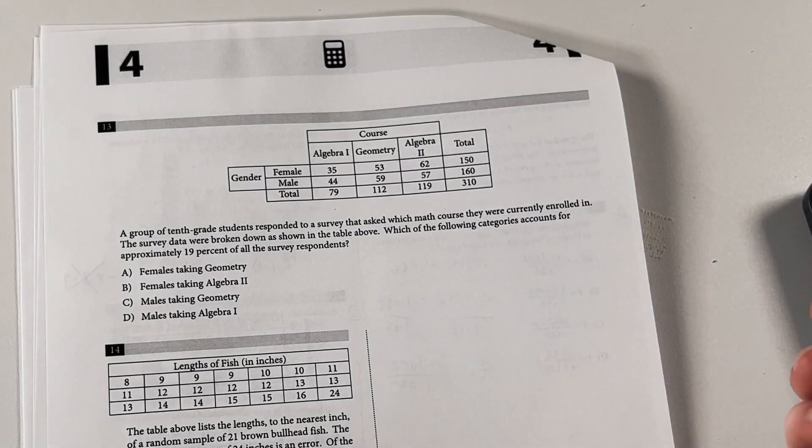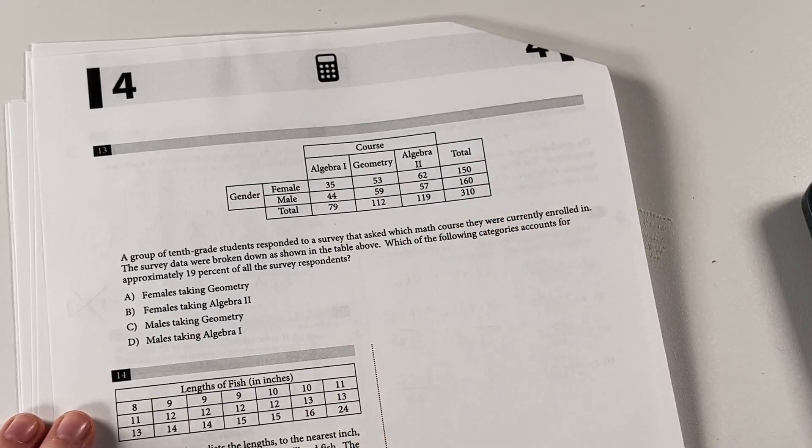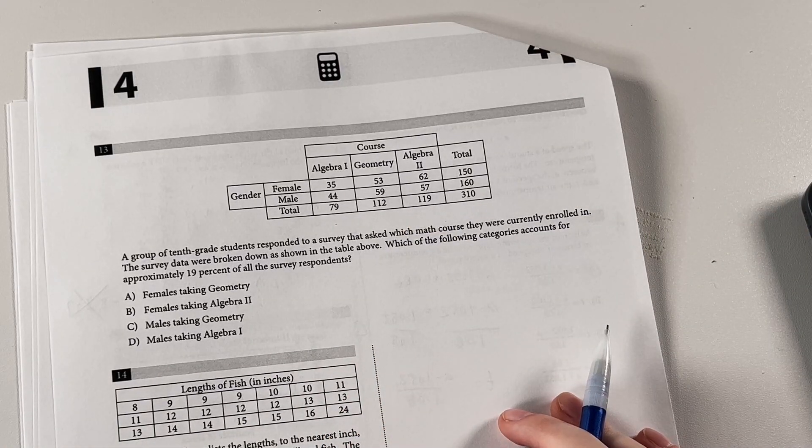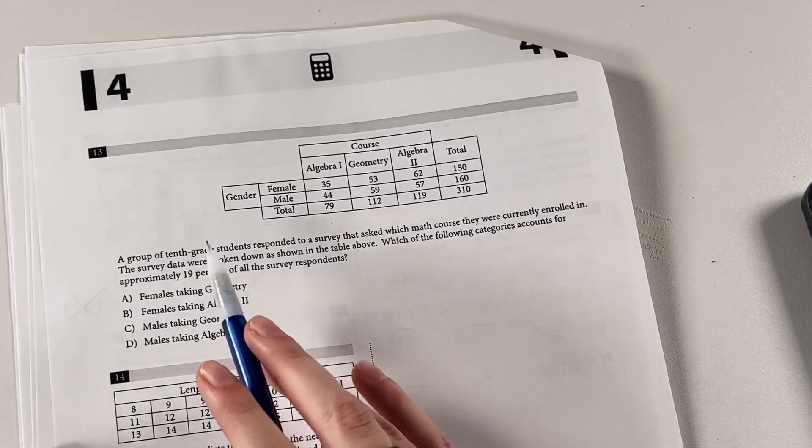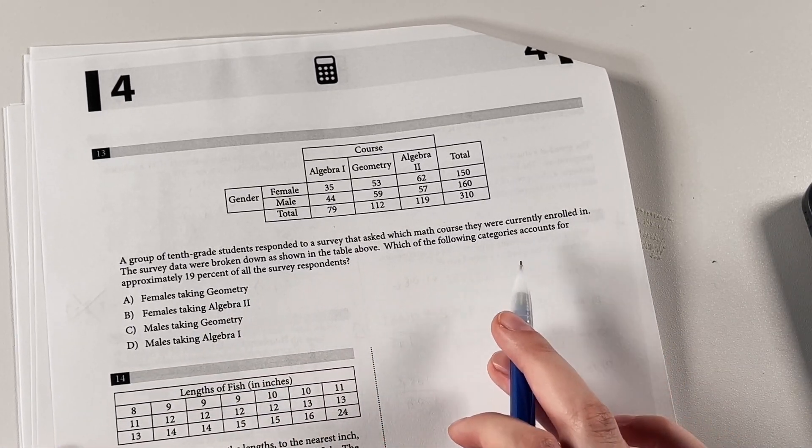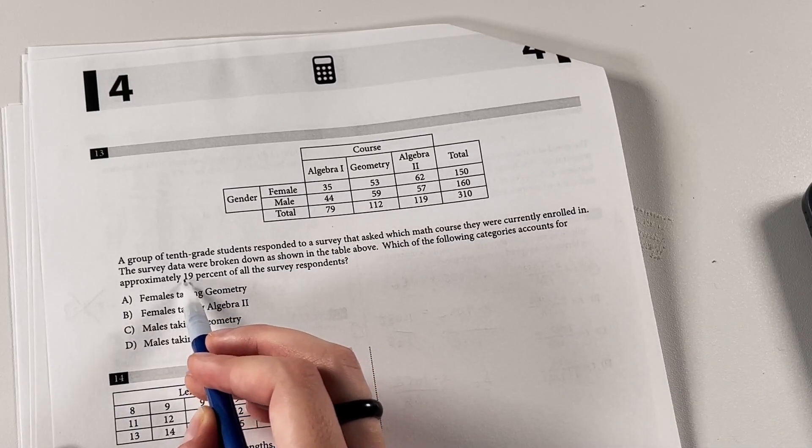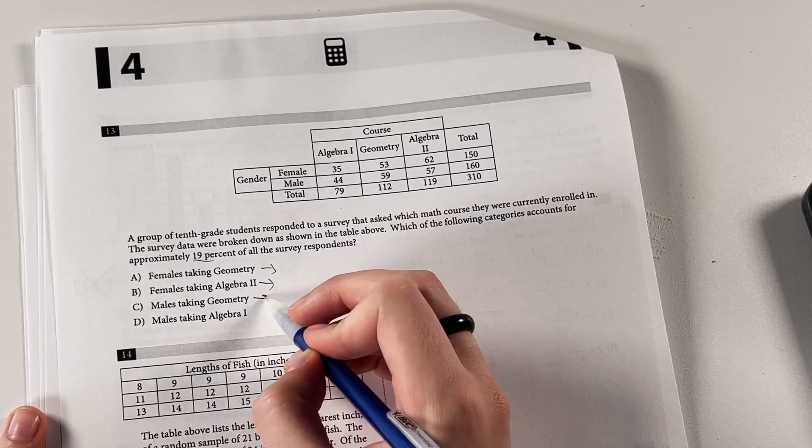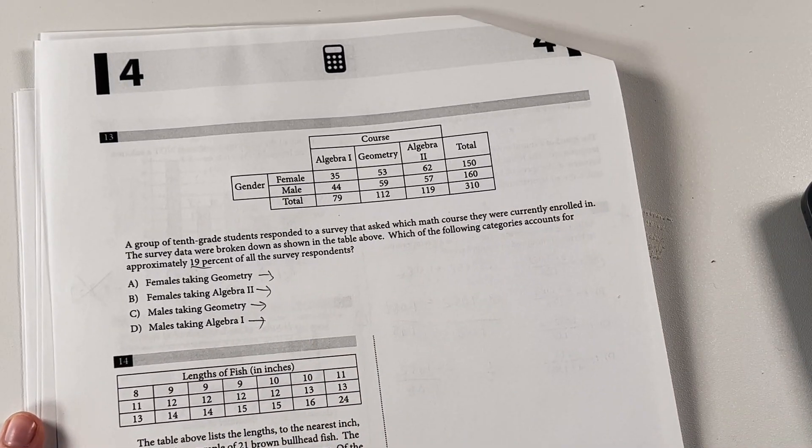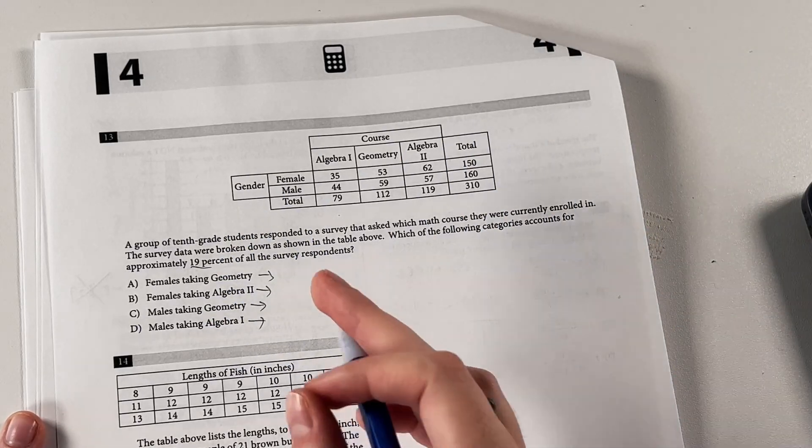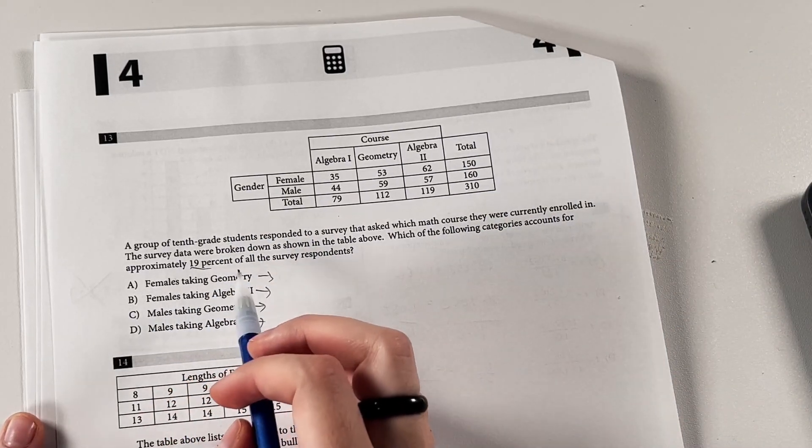All right, now we have two statistics questions in a row. I swear they like grouping them together. So a group of 10th grade students responded to a survey that asked which math course they were currently enrolled in. The survey data were broken down as shown in the table above. Which of the following categories accounts for approximately 19% of all the survey respondents? So this one's kind of annoying. You kind of just have to solve what percentage each of these are of the total. And be careful to divide by the right box. That's kind of the main way to go wrong with this one.